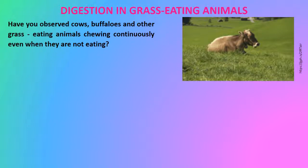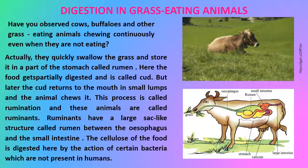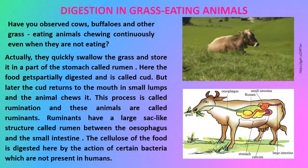Have you observed cows, buffaloes, and other grass-eating animals chewing continuously even when they are not eating? They quickly swallow the grass and store it in a part of the stomach called the rumen, where the food gets partially digested and is called cud. Later the cud returns to the mouth in small lumps and the animal chews it. This process is called rumination and these animals are called ruminants. Ruminants have a large sac-like structure called the rumen between the esophagus and the small intestine. The cellulose of the food is digested here by the action of certain bacteria, which are not present in humans.